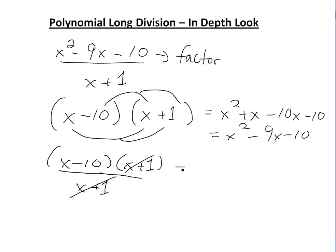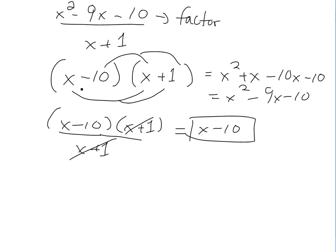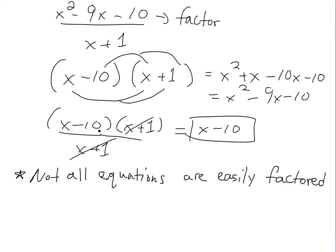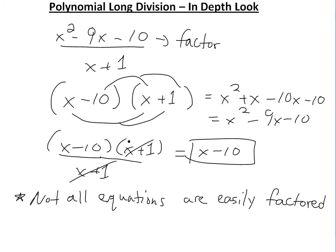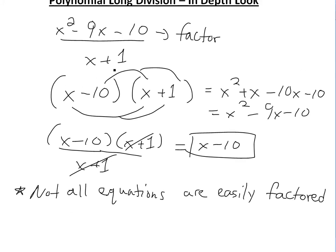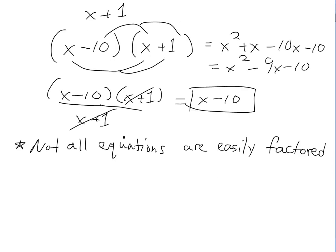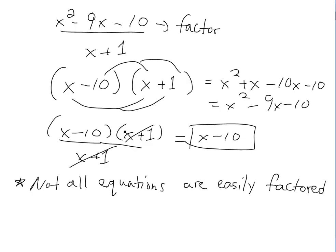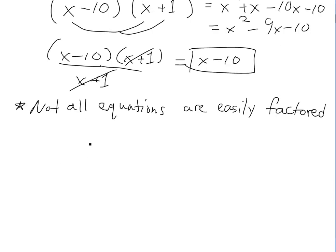In this case that gives x minus 10. But the problem is that not all equations can be factored so easily. And also, even if they are easily factored, you can't necessarily cancel — the math doesn't always work out this way. So now let's look at the long division method.